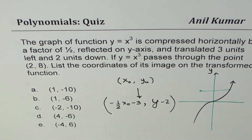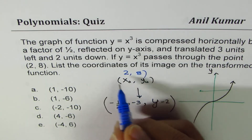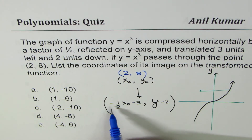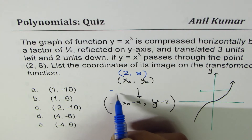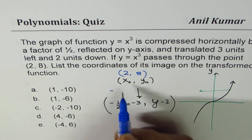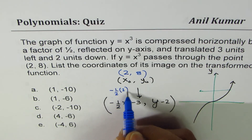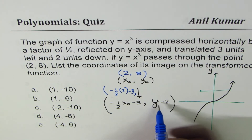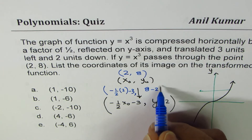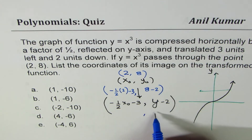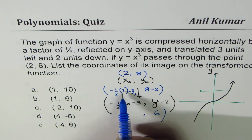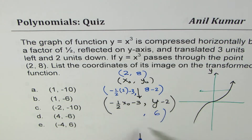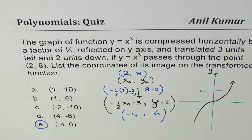Substituting (2, 8): for x, we get -(½ × 2) - 3, which equals -1 - 3 = -4. For y, we get 8 - 2 = 6. So the image point is (-4, 6), which is option E. There are many ways to do it — you could write the transformed function equation — but this direct substitution approach is probably the best and fastest way.